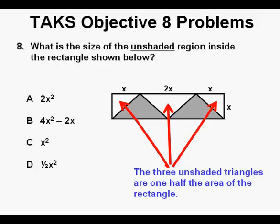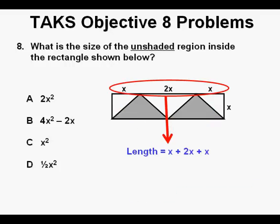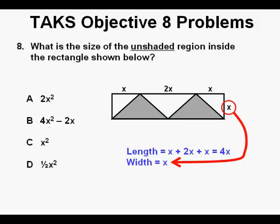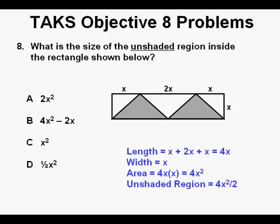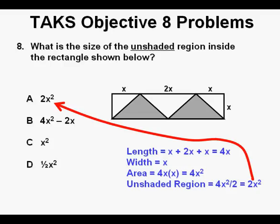And that means that the unshaded triangles represent one half of the total area of the rectangle. So we need to find the area of the rectangle. Its length is x plus 2x plus x units on the top. And that totals to be 4x in length. And the width of the rectangle is x units. So our area of the rectangle is 4x times x. And that equals 4x squared. And since the unshaded region is half the area of the rectangle, that would be 4x squared divided by 2. And that is 2x squared. And that is the area here in the first answer when we circle our correct answer A. This is sort of an SAT caliber question, but TAKS problems sometimes are like this.